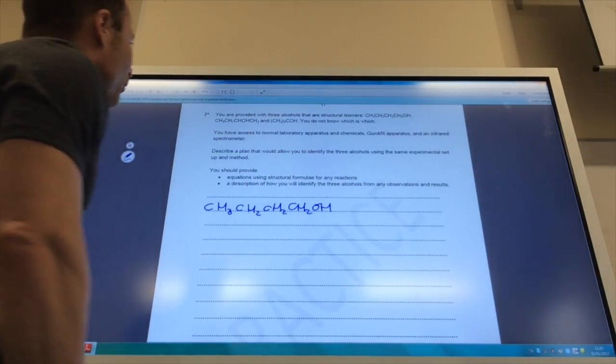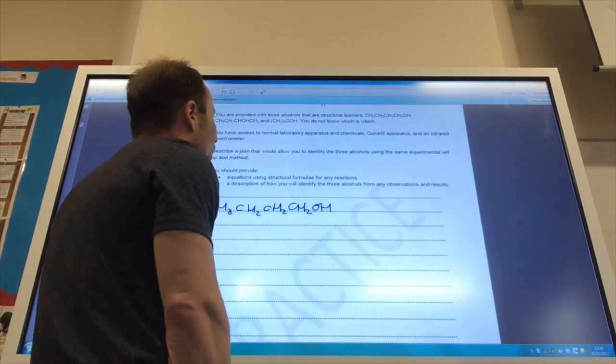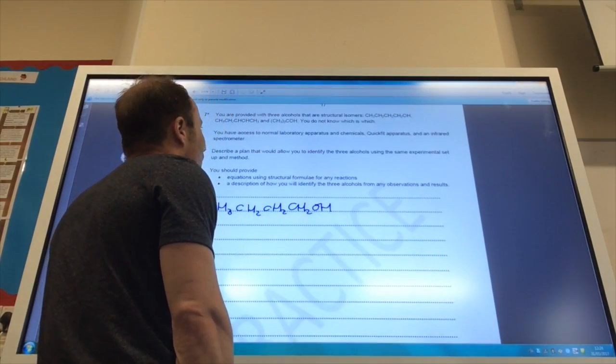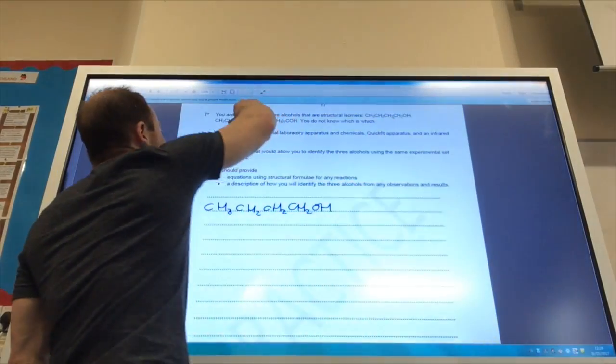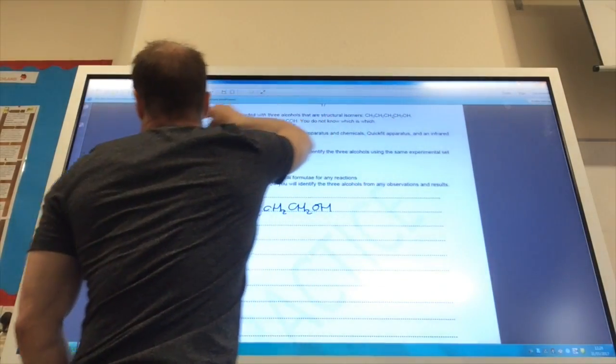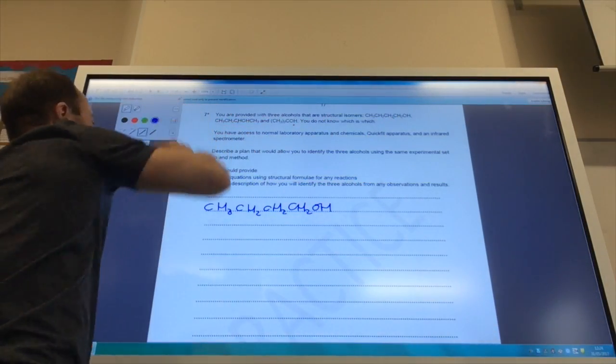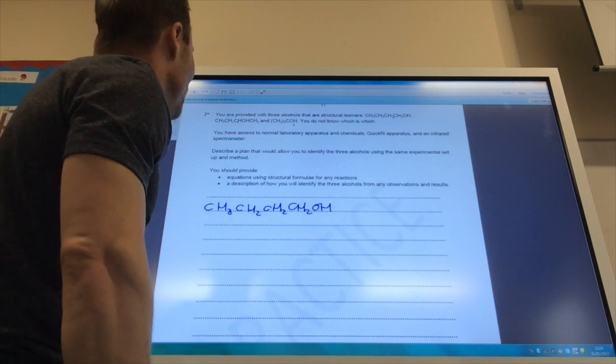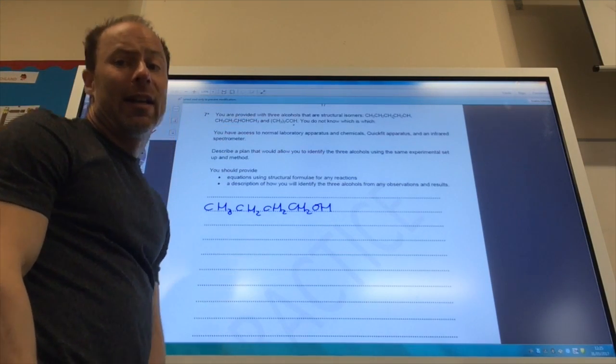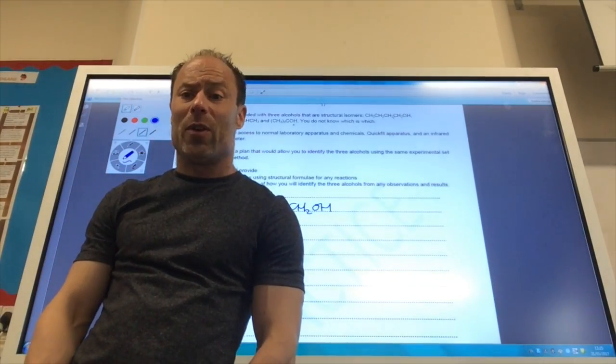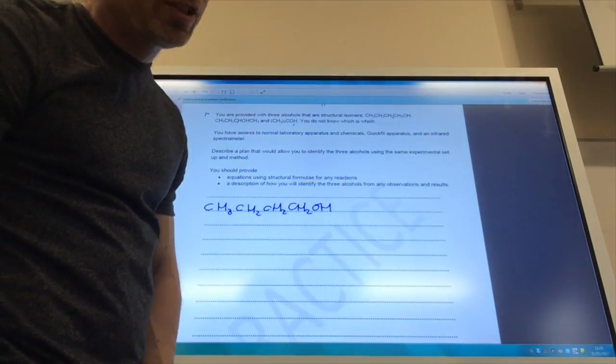Right, so I've now got three alcohols, and I've got to identify which ones they are. Key thing to note, this one is primary, this one is secondary, and this one is tertiary. So, how do you go about it? Well, I would reflux all three with K2, CR2, O7 in acidic conditions.